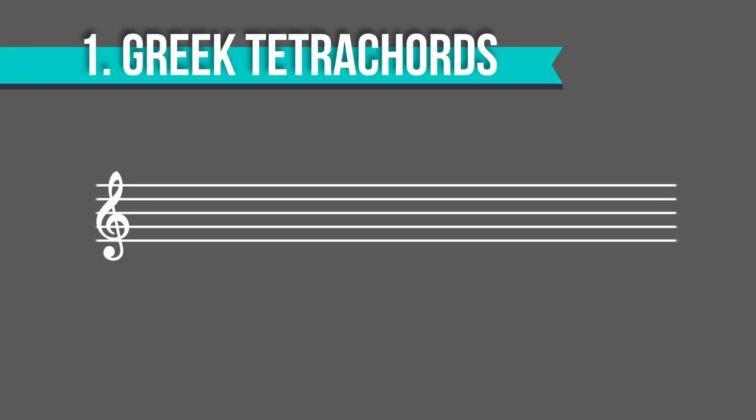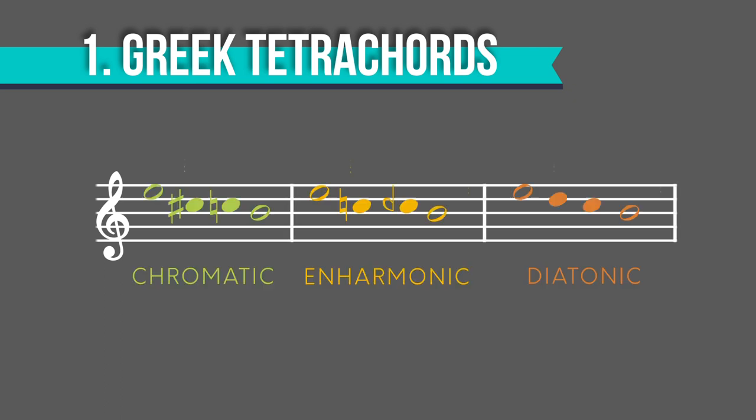In ancient Greece, music theorists had developed these tetrachords. There were three different types: chromatic, enharmonic, and diatonic. Over time, they decided that diatonic was the most natural, and it was certainly the most popular. It was only a matter of time before they discovered that you could get a lot more notes out of it if you just started stringing together diatonic tetrachords.